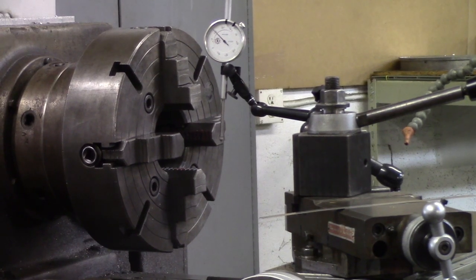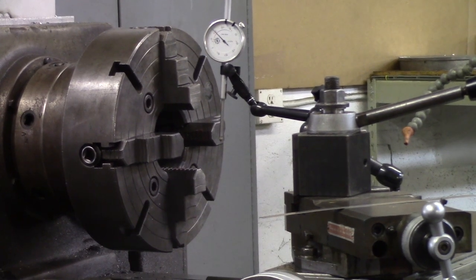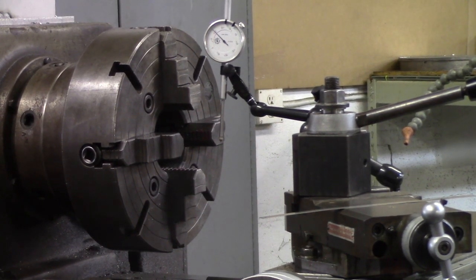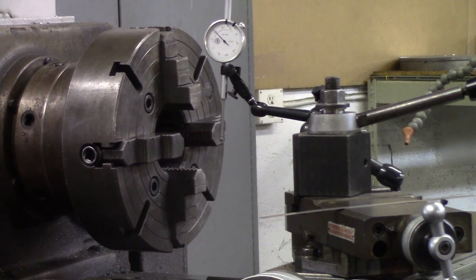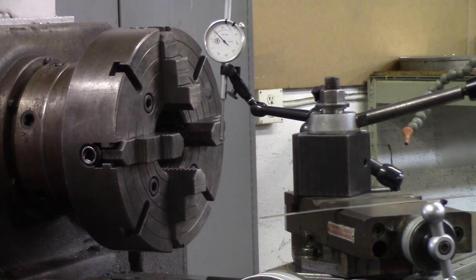Before we get started let me go over a few rules. You want to be sure to be very clean. You want to use the reference circles on the front of the jaw or front of the chuck for reference so you can look at your jaws and move them accordingly to the circles, and if you do that that'll get you within 50 thou or so.